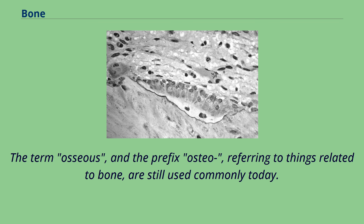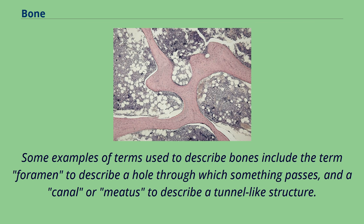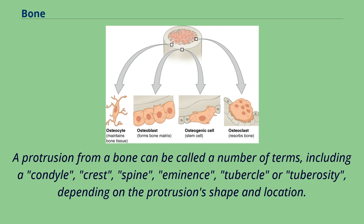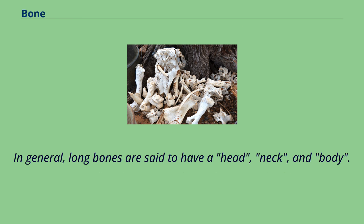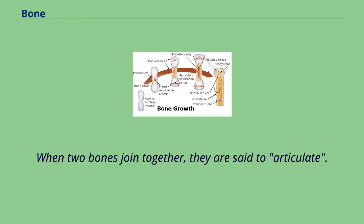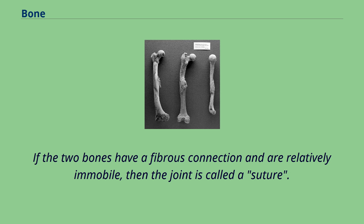Some examples of terms used to describe bones include the term foramen to describe a hole through which something passes, and a canal or meatus to describe a tunnel-like structure. A protrusion from a bone can be called a condyle, crest, spine, eminence, tubercle, or tuberosity, depending on the protrusion's shape and location. In general, long bones are said to have a head, neck, and body. When two bones join together, they are said to articulate. If the two bones have a fibrous connection and are relatively immobile, then the joint is called a suture.